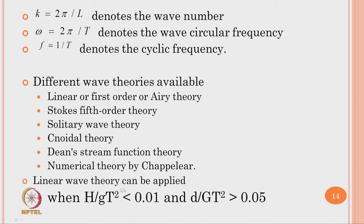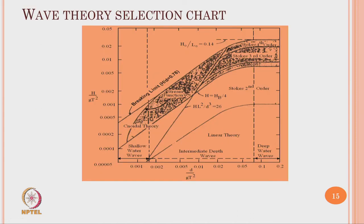Linear wave theory can be applied only when h/gT² < 0.01 and d/gT² > 0.05. The chart shown in the slide governs the selection of the appropriate wave theory depending on the two ratios h/gT² and d/gT². For a given wave period, water depth, and wave height, you can determine the horizontal and vertical axis values and select the appropriate theory — linear theory, Stokes second order, cnoidal theory, shallow water theory, etcetera — then estimate horizontal and vertical water particle velocity and acceleration.